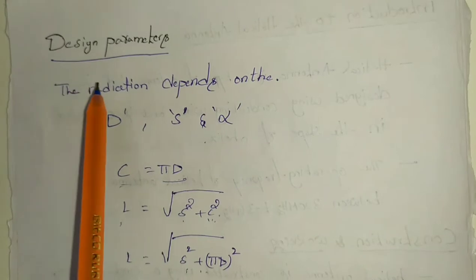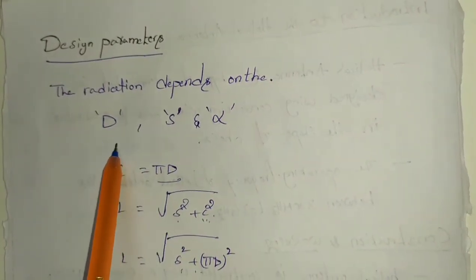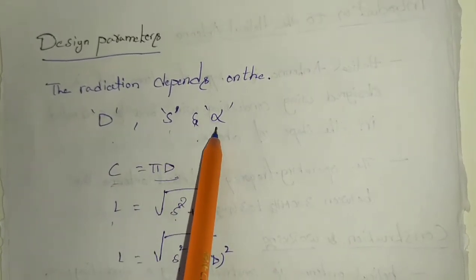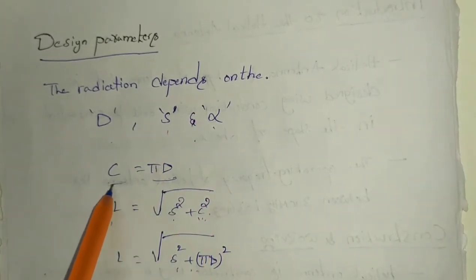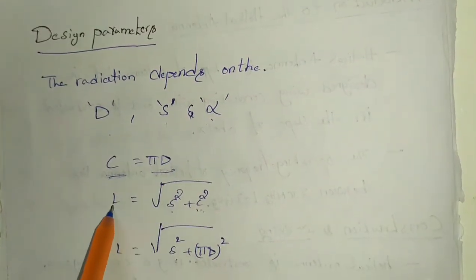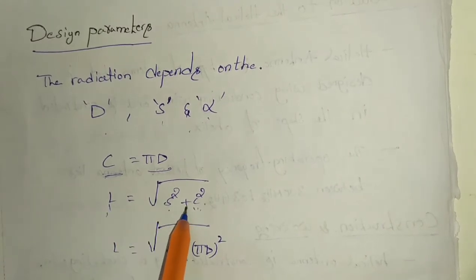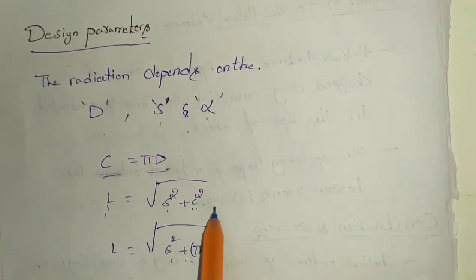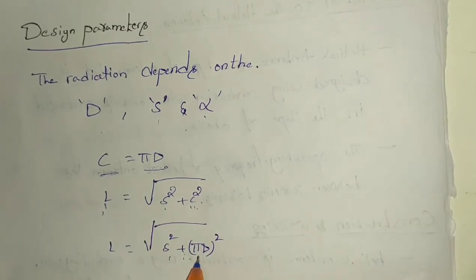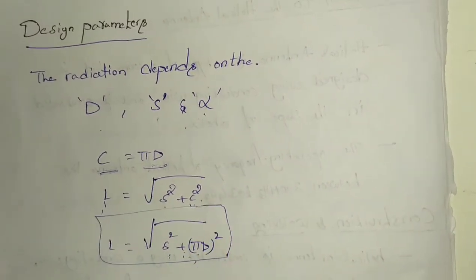Now let's move on to the designing parameters. The radiation depends on D, which is the diameter of the helix. Alpha is the turn spacing and pitch angle. C is the circumference of the helix, where C equals pi times D. The length of the helix l equals the square root of s squared plus C squared, which simplifies to the square root of s squared plus (pi D) squared.